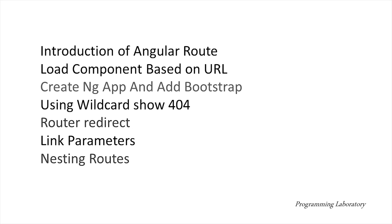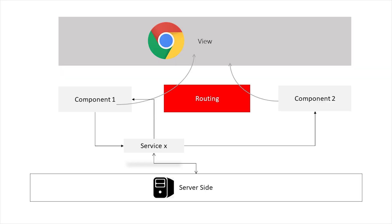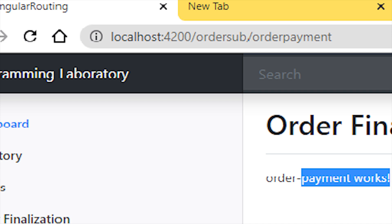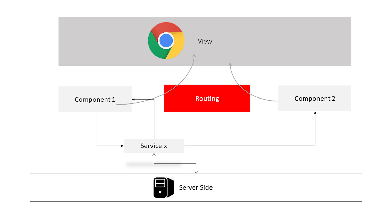In an Angular single page application, to handle the navigation from one particular view to another view, we use the Angular router. The Angular router takes the browser URL and from there it tries to interpret the instruction for changing the view — it takes the URL pattern and based on that pattern it tries to load the component into the view. Interestingly, it won't call the server side for each view load; you can design your application so the server side call is not made every time a view changes.